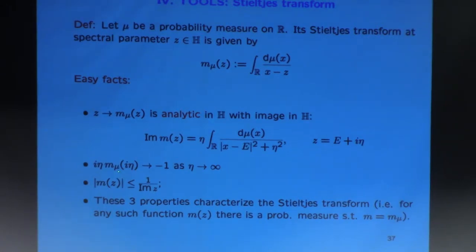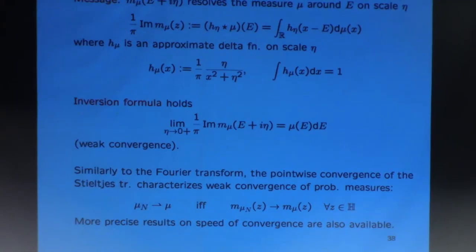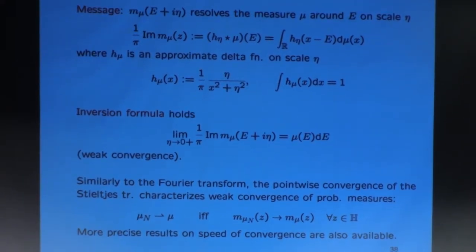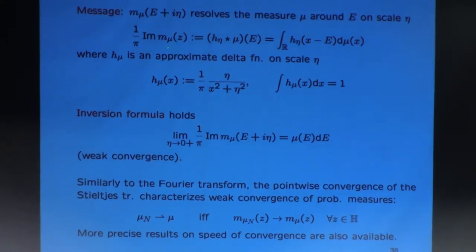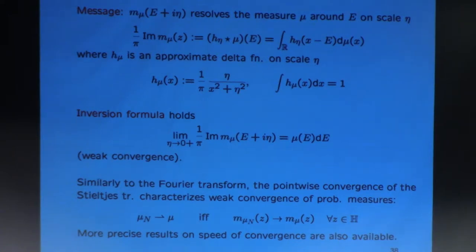These first two properties already characterize the Stieltjes transform in the sense that if you have a function from the upper half plane to the upper half plane satisfying the first two conditions, then it is the Stieltjes transform of some measure. The key message is that the Stieltjes transform resolves the measure on a small scale — specifically on the scale of the imaginary part eta of the spectral parameter. The imaginary part of the Stieltjes transform is the convolution of the original measure with an approximate delta function living on scale eta.